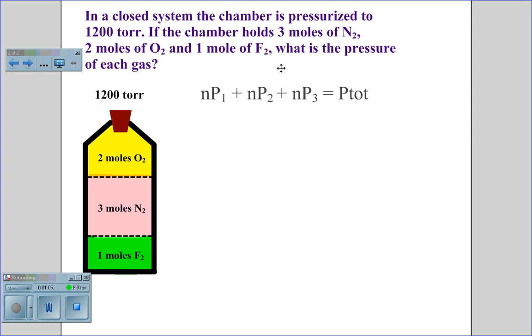The equation for Dalton's Law, Np1 plus Np2 plus Np3 equals p total, gives us 2 moles of the first gas, p1, plus 3 moles of the second gas, p2, plus 1 mole of the third gas, p3, equals the total pressure in the system, 1200 torr.